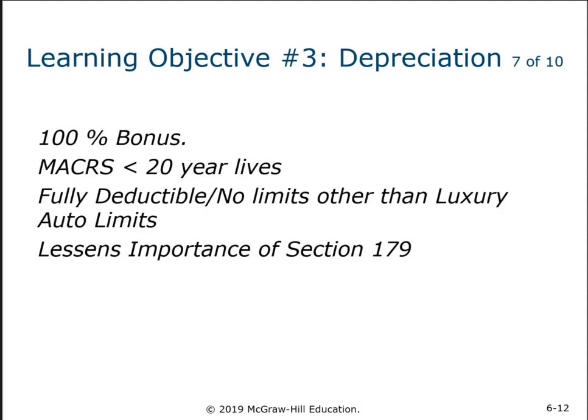Congress one-upped it even further. For 2022, you get 100% bonus depreciation on all assets that have a useful life less than 20 years — all three-, five-, and seven-year property. It doesn't apply to real estate or buildings. As long as the useful life is less than 20 years, you can take 100% bonus depreciation. If you buy an asset for $10,000, instead of waiting seven years to deduct one-seventh each year, you deduct all $10,000 in year one.